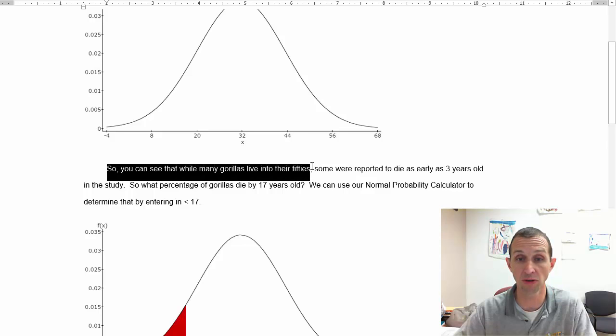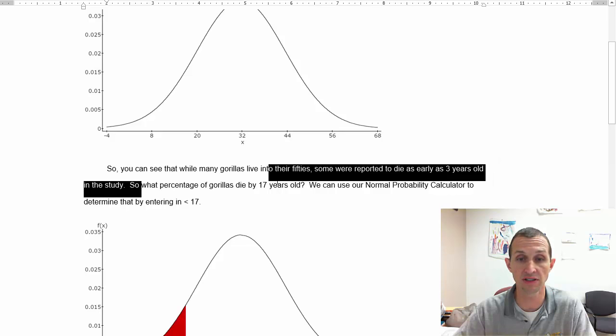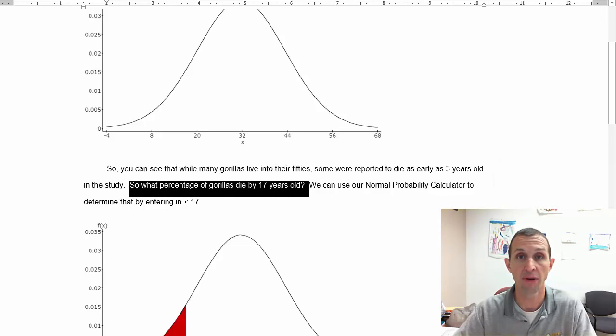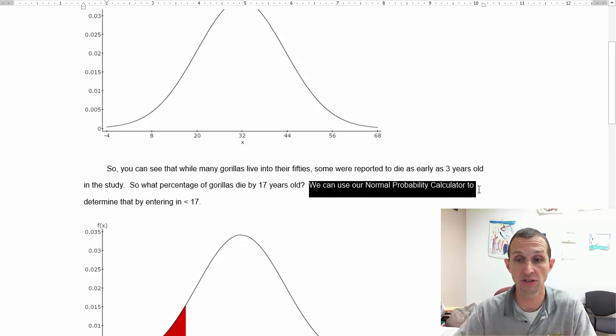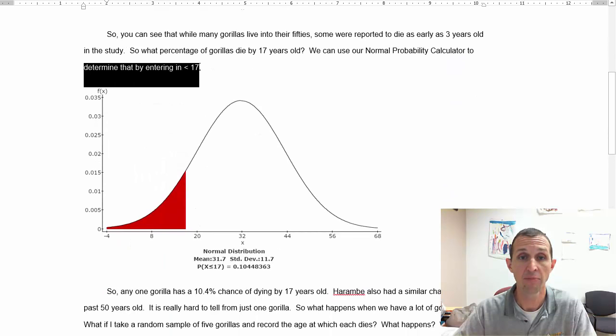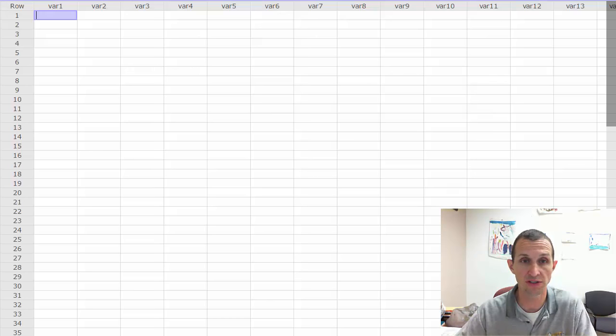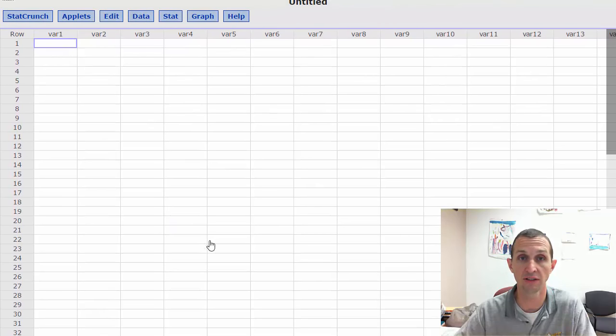So you can see that while some gorillas may live into their 50s, some were reported to die as early as three years old. Okay so what percentage of gorillas die by 17 years old? Well we can actually use our normal probability calculator to determine that by entering less than 17. So these would be all gorillas less than 17 years old. So let's switch over to StatCrunch and I want to show you what that looks like.